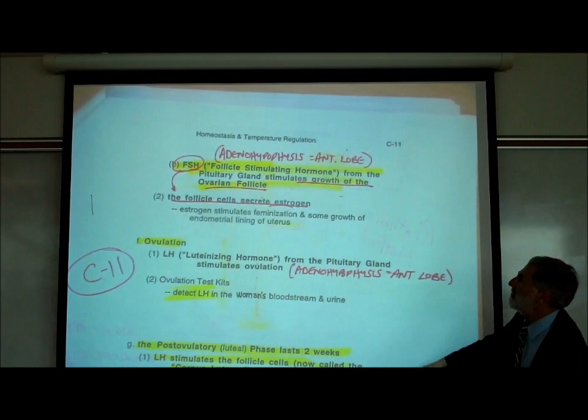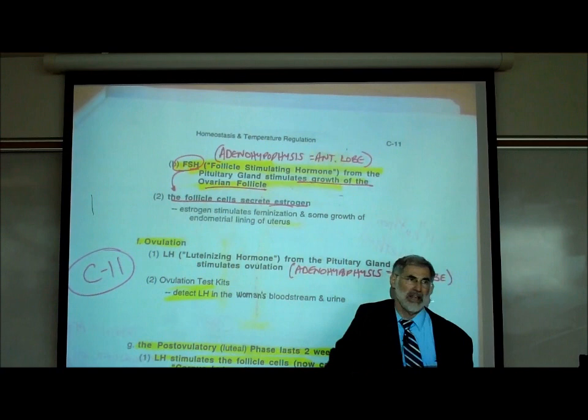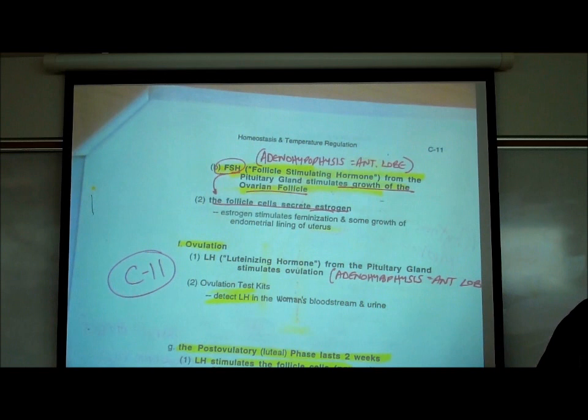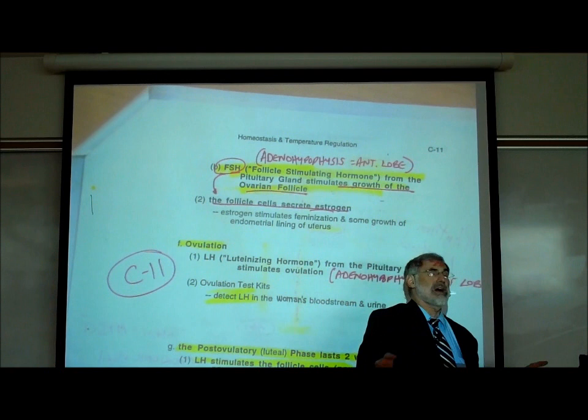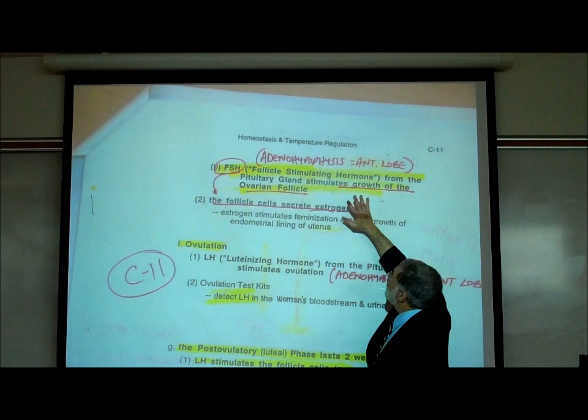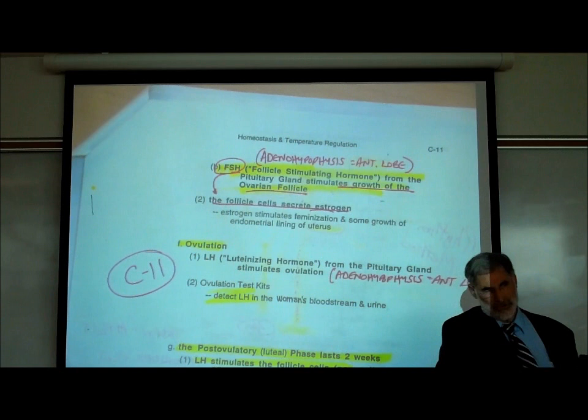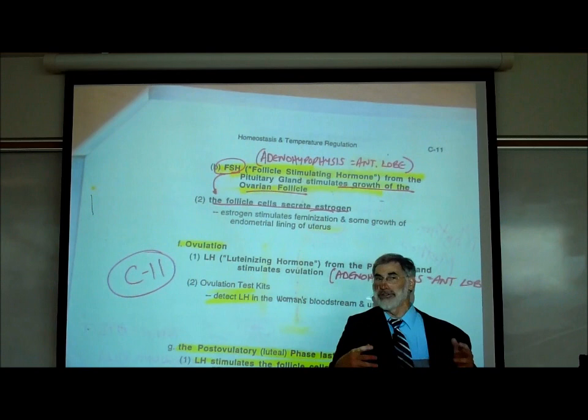The pituitary has two lobes — an anterior and a posterior lobe, the adenohypophysis and neurohypophysis. We'll review that in much greater detail later in the course. FSH — Follicle Stimulating Hormone — stimulates the growth of something called an ovarian follicle in the ovaries. Not only does FSH stimulate the growth of an ovarian follicle, it also stimulates the follicle cells to secrete estrogen.